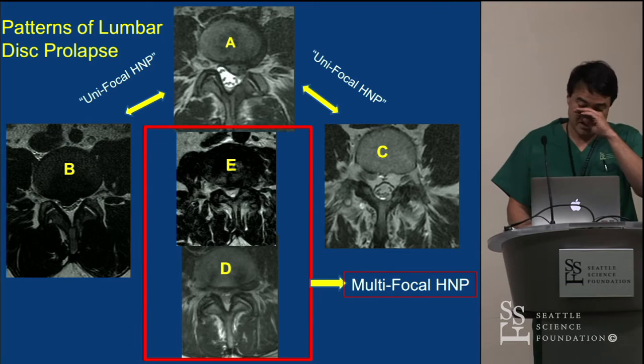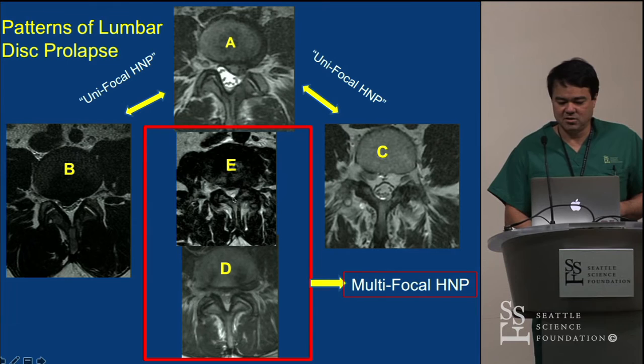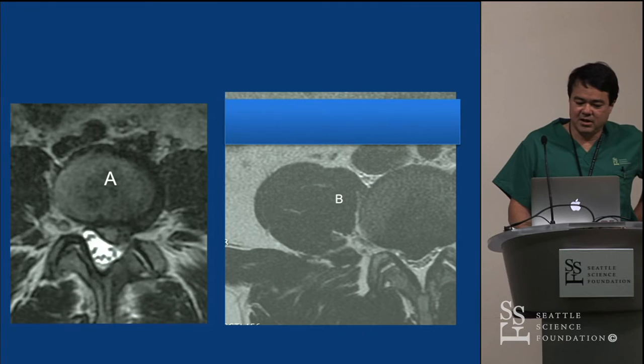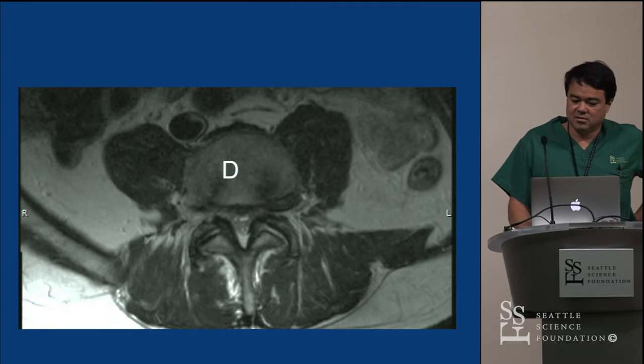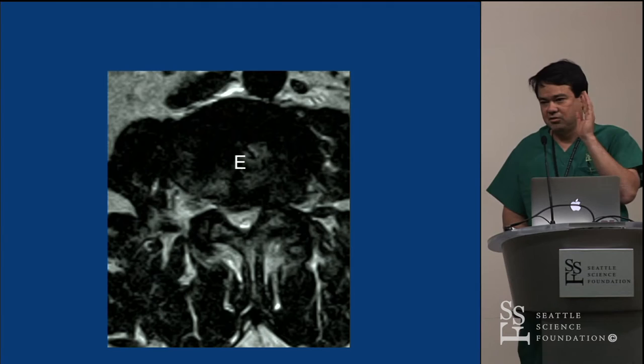The multifocal herniations — far lateral, subarticular, and the trifecta herniation — are actually not that difficult. I think those are easier than a type C unifocal. Type A, type B, C subannular, D far lateral and subarticular, and E: central, subarticular, far lateral — that's the full classification.